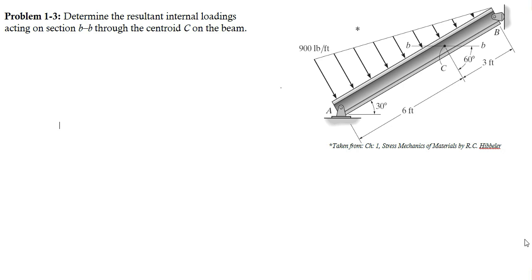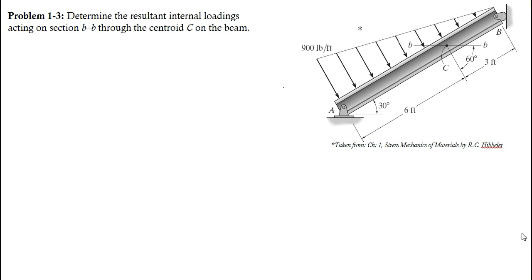Hello everyone. In this video we are going to solve problem number 3 from the chapter of stress in the book Mechanics of Materials by R.C. Hibbeler. In this problem it is required to determine the resultant internal loading acting on section BB through the centroid C, as shown in the figure.